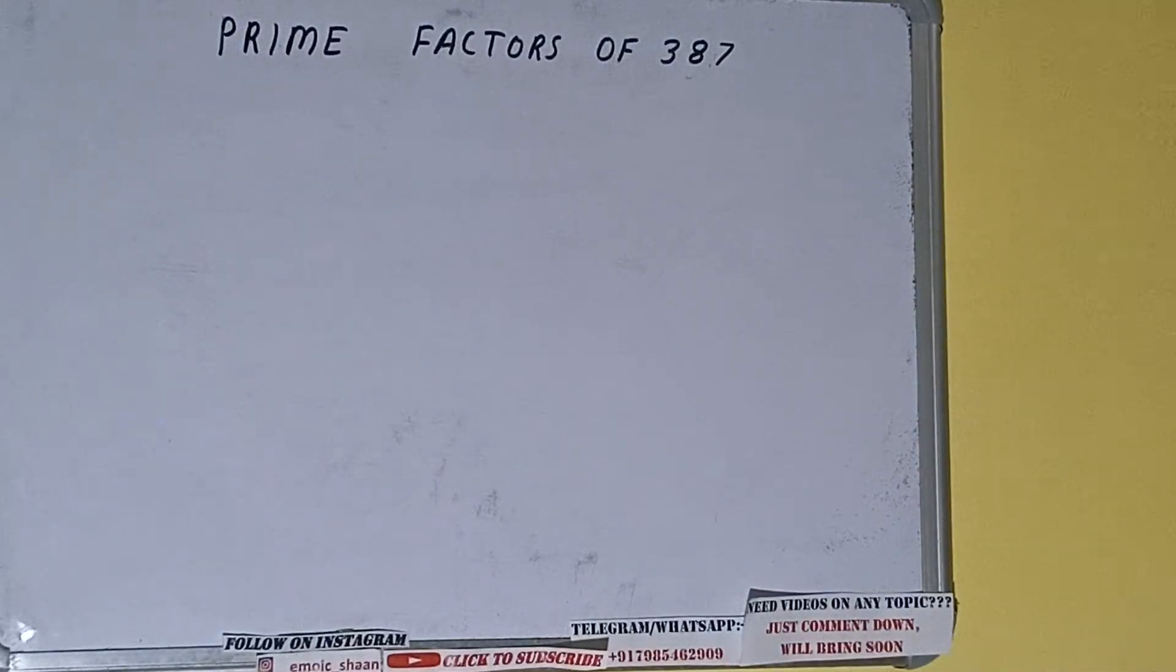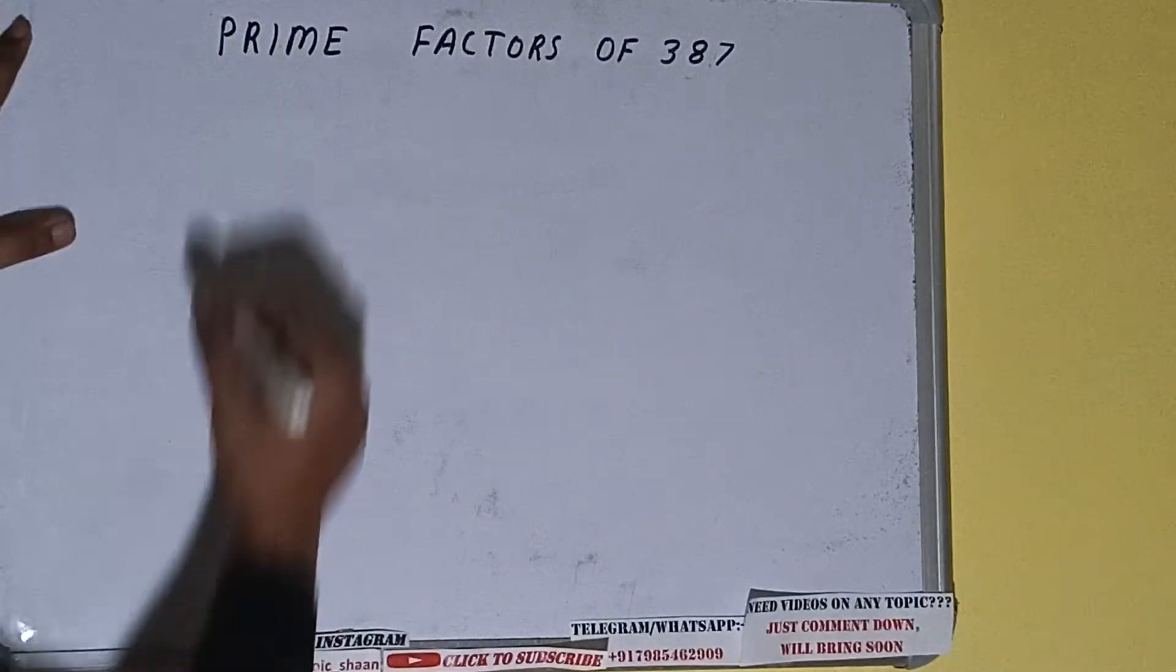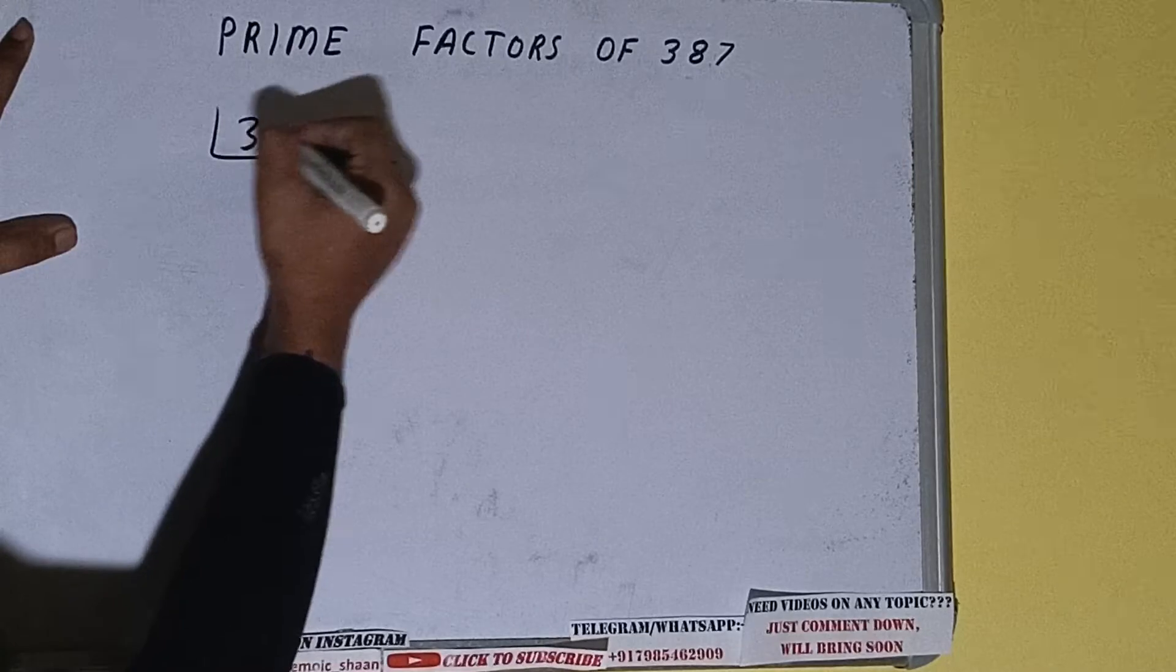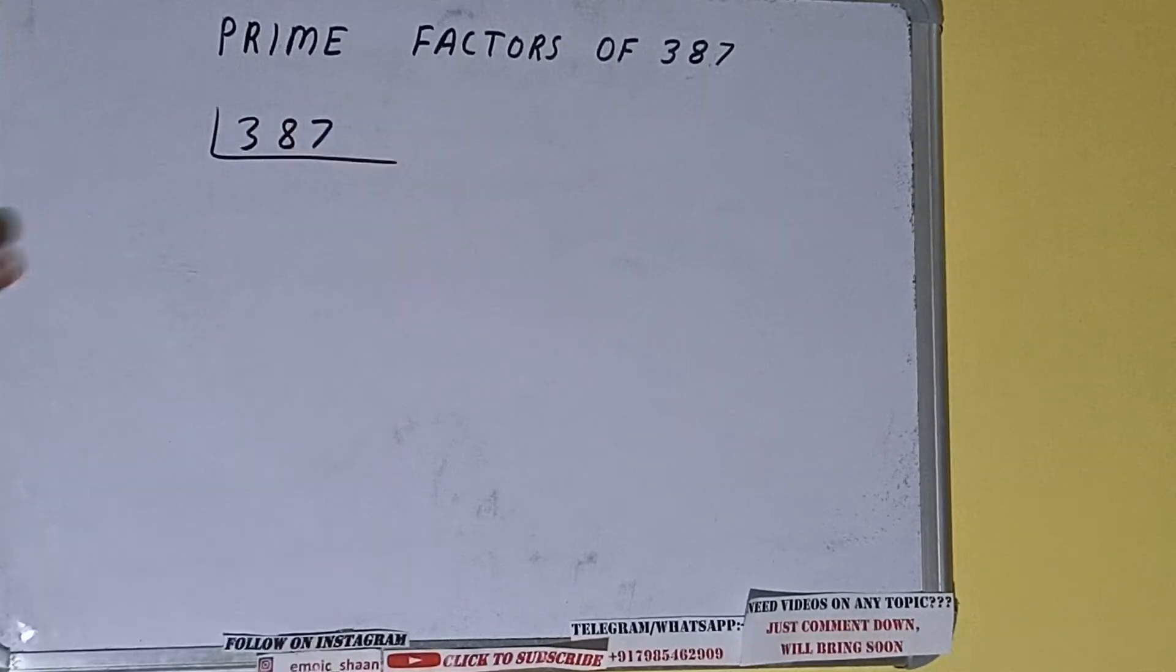Hello friends, and in this video I will be helping you with the prime factors of the number 387. So let's start. First of all, we need to write the number like this. The next thing we need to know about is what are prime numbers. Prime numbers are numbers that are divisible by 1 and the number itself, like 2, 3, 5, 7, and so on.